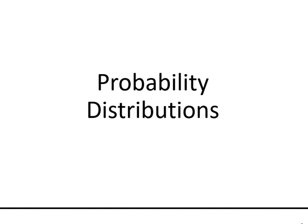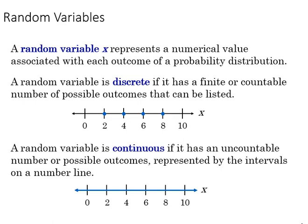Hi, this presentation is going to discuss probability distributions. We'll begin this discussion by defining a random variable, which is a numerical value associated with each outcome of a probability distribution. That may be discrete or continuous, and a discrete variable is one with finite or countable number of options, while continuous has an uncountable infinite number.